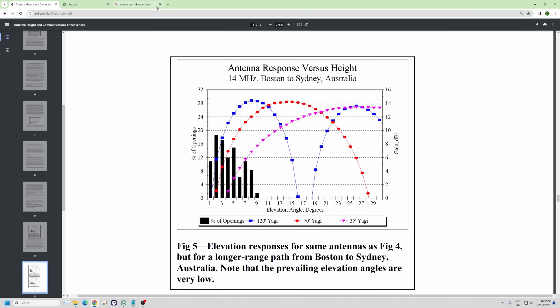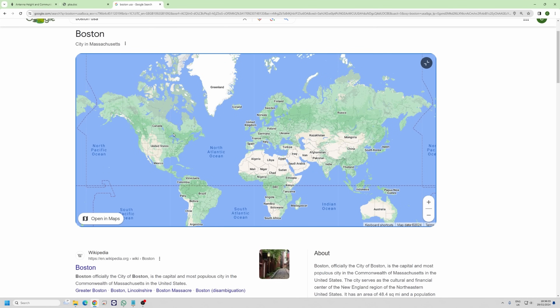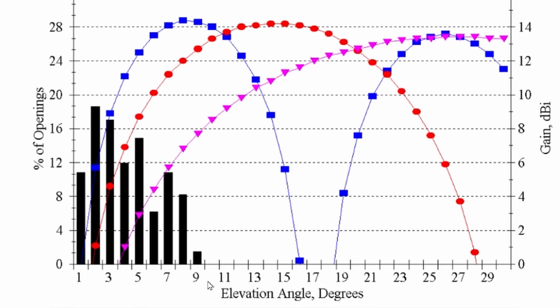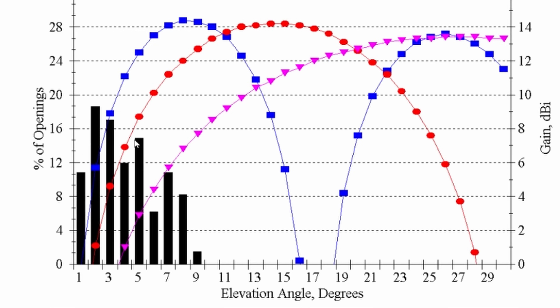Scrolling further, this graph shows Boston to Sydney on 14 MHz — going from Boston basically to the other side of the world. At one degree it's 10% of the time, and there's nothing beyond nine degrees. So five degrees is a good average, and I'll tell you why I like it as a benchmark — your signals aren't necessarily traveling at exactly five degrees elevation.